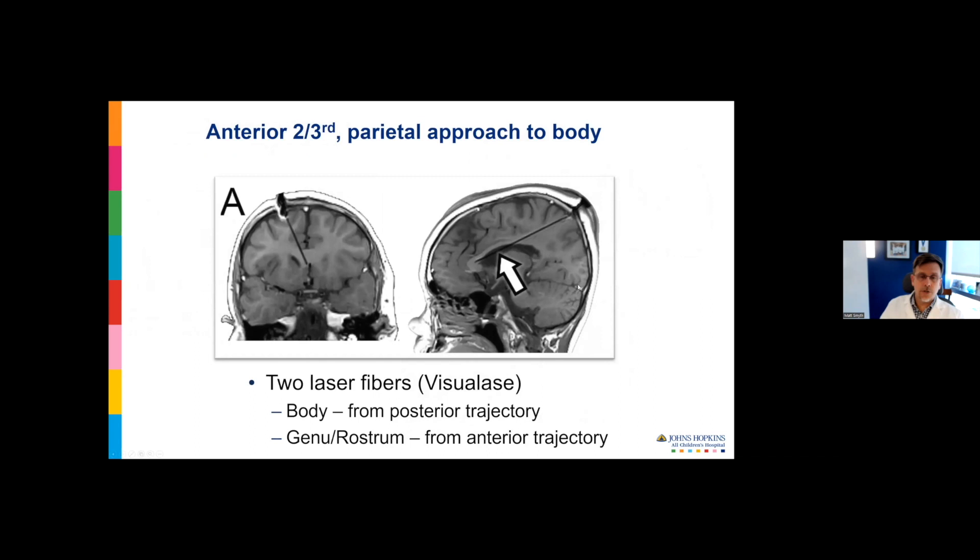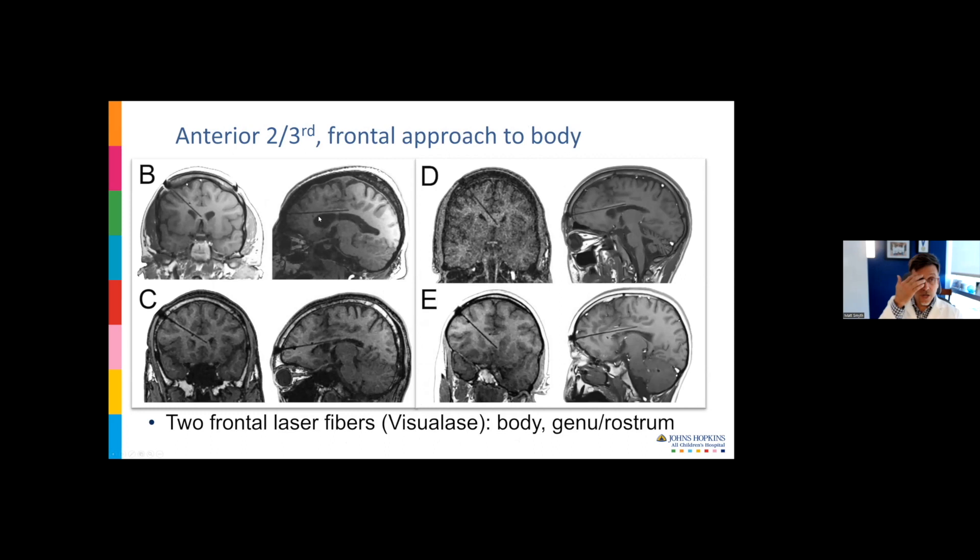Once I'd gained confidence with single fiber ablations, we started doing anterior two-thirds ablations with a catheter coming obliquely in the frontal area near the hairline, down to get the genu and the rostrum. I was trying to avoid putting catheters near the forehead. You can see the problem with this suboptimal position of the laser catheter. Despite excellent registration, some deflection occurred, perhaps with drilling or when the fiber hit the dura, and the catheter went too low and missed most of the callosum. We had to reposition the catheter.